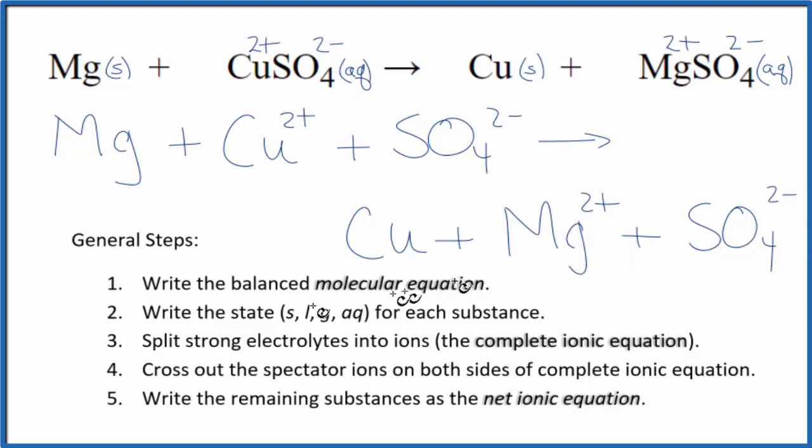This is the complete or total ionic equation. Now, we can cross out spectator ions. They're on both sides of the complete ionic equation. They haven't changed, so we're not really interested in them.